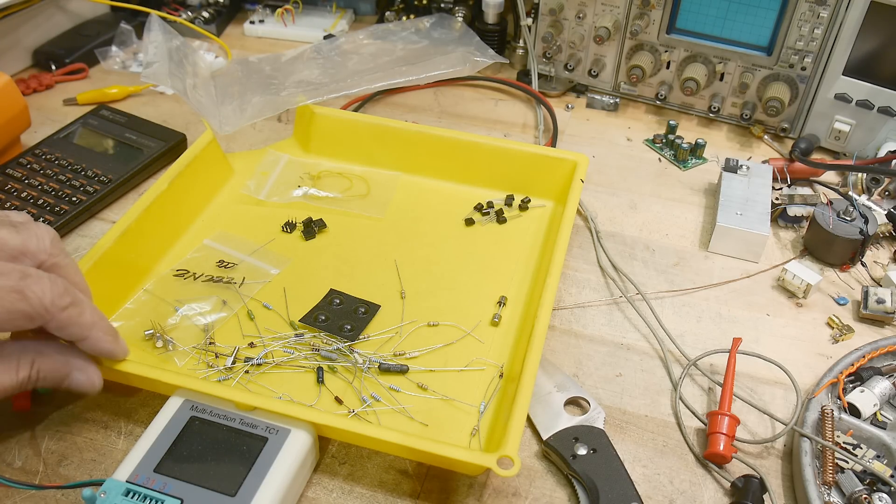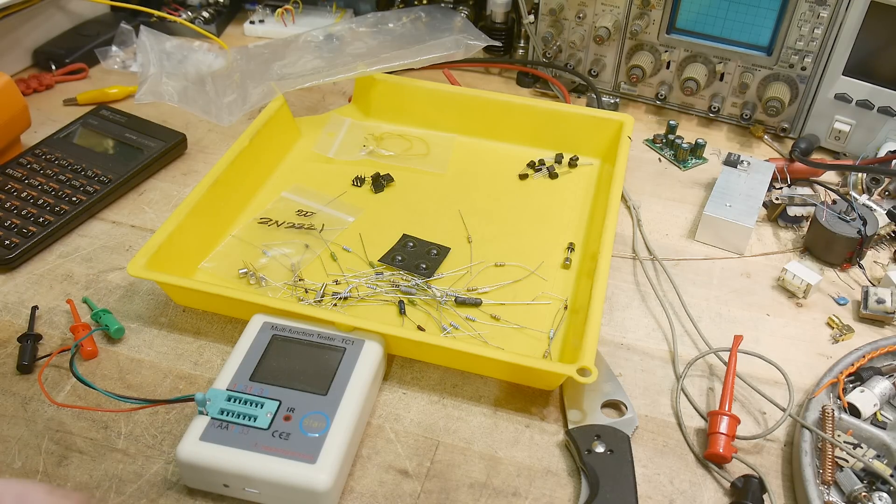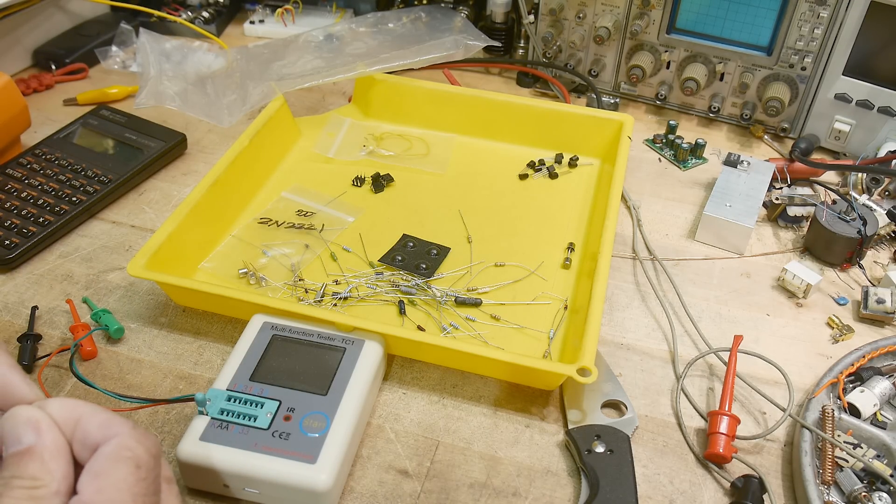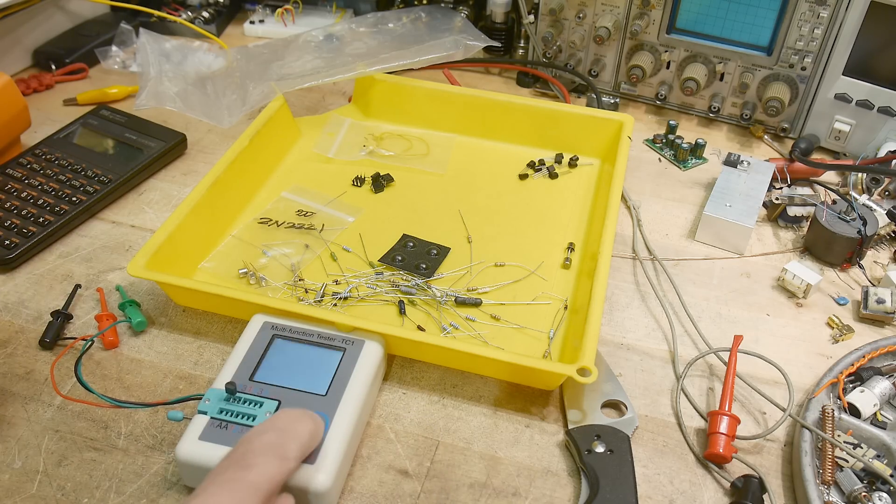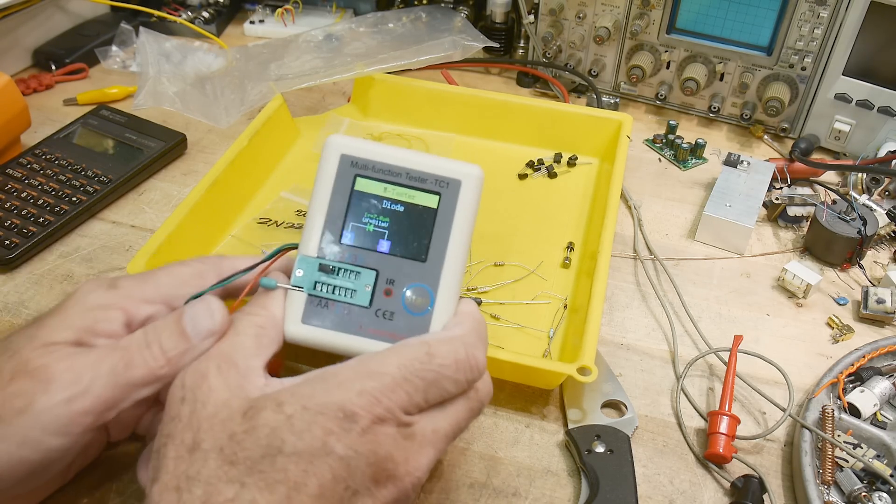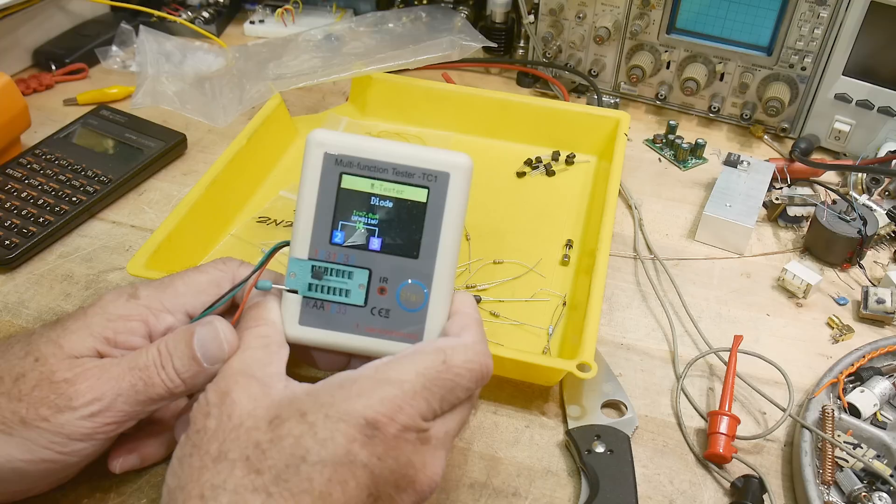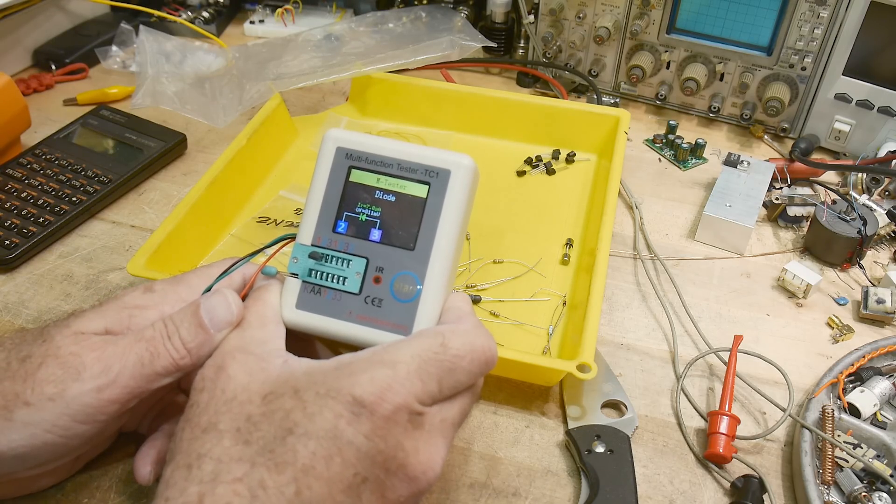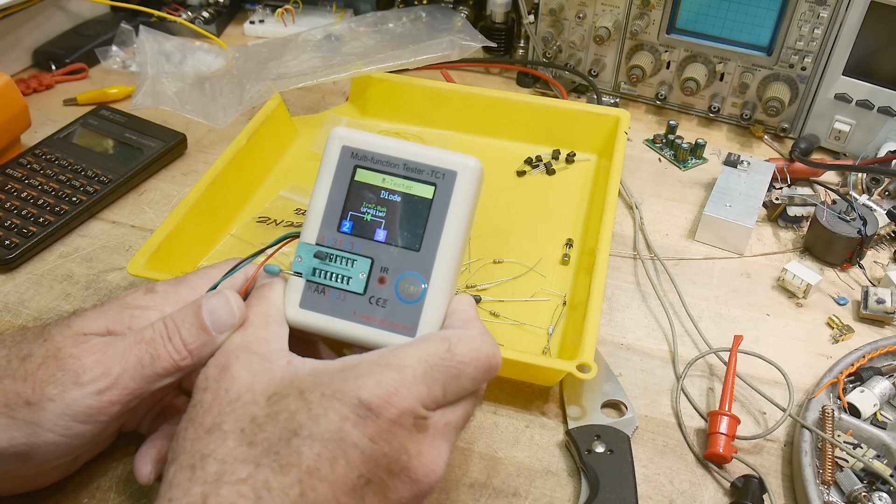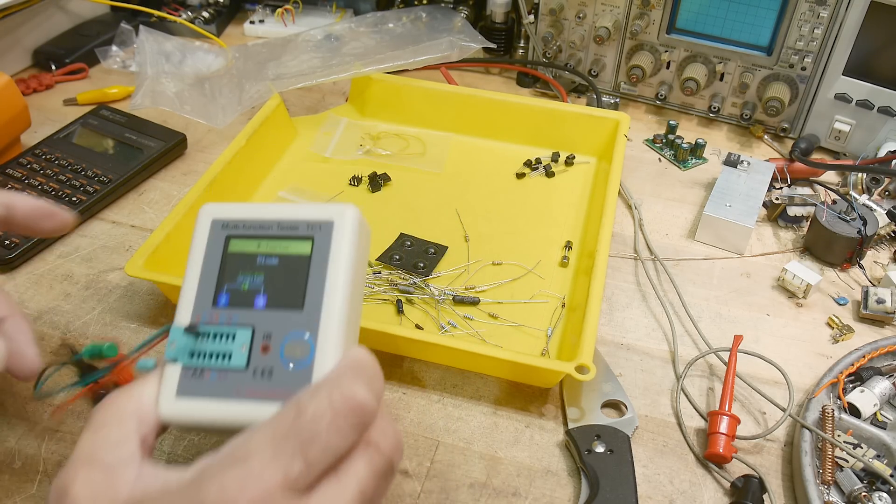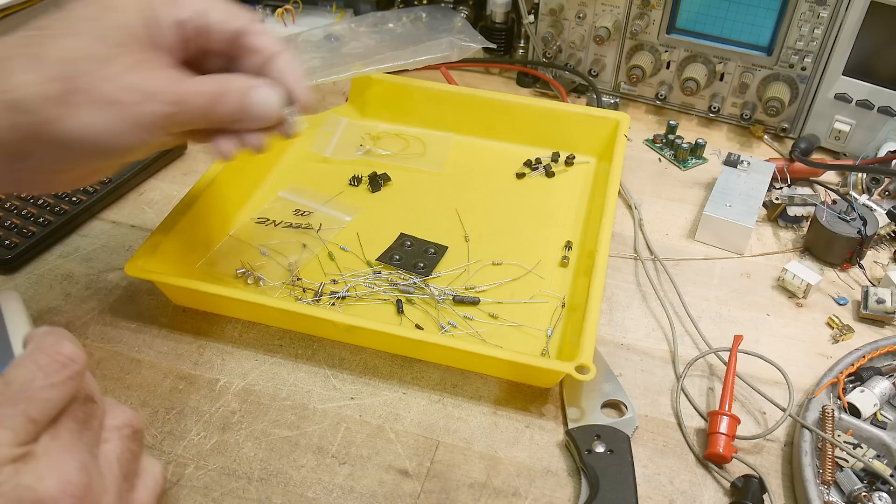Whenever I don't know what something is, I use my little tester here. I did a video on this. Let's see here. Let's pop him in. Push the button. And he says it's a diode. Okay. Floor voltage, 0.8 volts. Hmm. I don't know. It's a diode. That's weird. All right. Well, maybe it's some kind of weird device this thing doesn't understand.